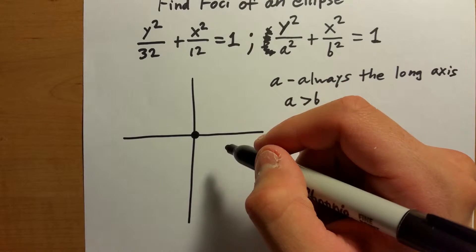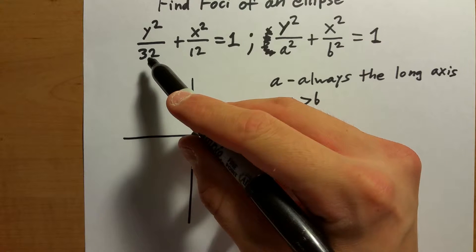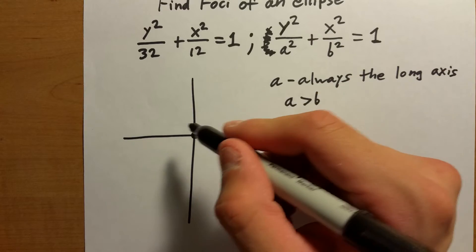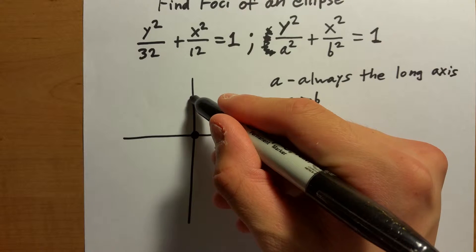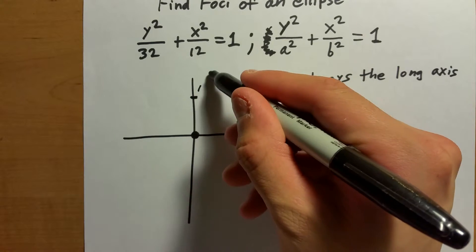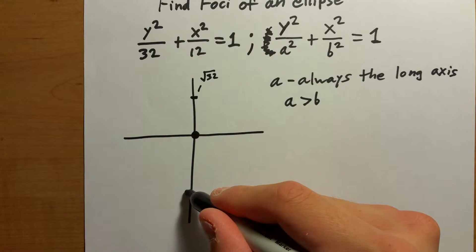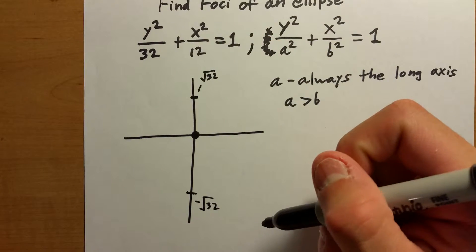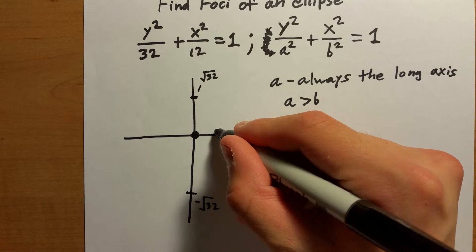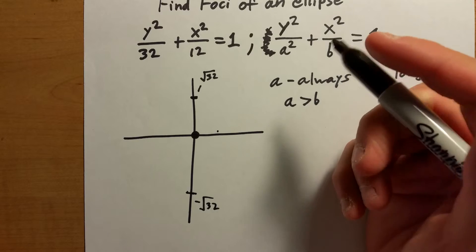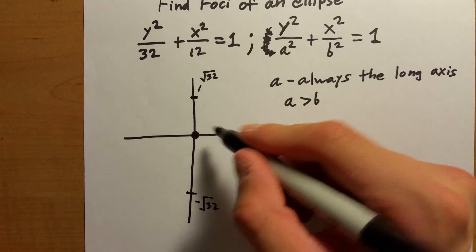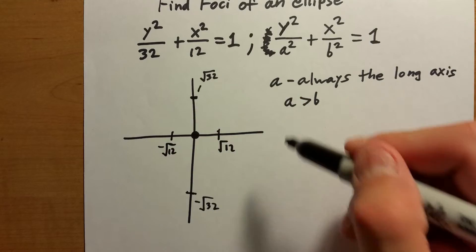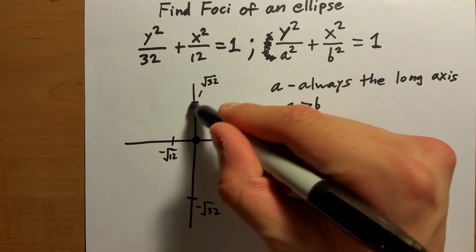The square root of 32 is not a very nice number, so we're just going to plot approximately — let's say this right here is the square root of 32, and down here is the negative square root of 32. For the sides, the square root of 12 is most likely going to be somewhere between three and four, so let's say right here is the square root of 12 and over here is the negative square root of 12. Sorry I used terrible numbers for this example, but we can piece together the ellipse.